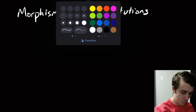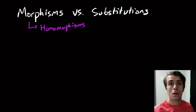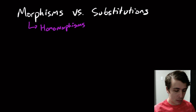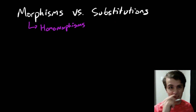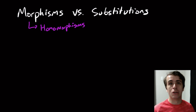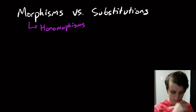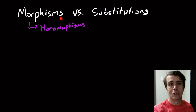You may have seen this word in a different form — I've talked on the channel about things called homomorphisms. It's just another term for the exact same thing. We're going to talk about morphisms and substitutions because it makes a lot of the closure properties we're going to discuss in subsequent videos significantly easier.